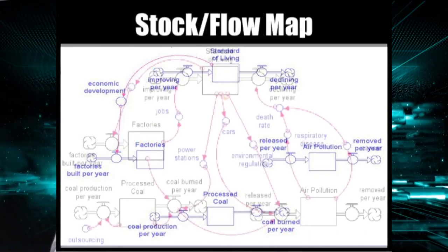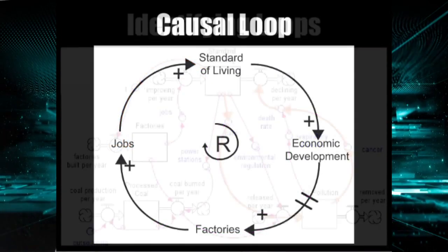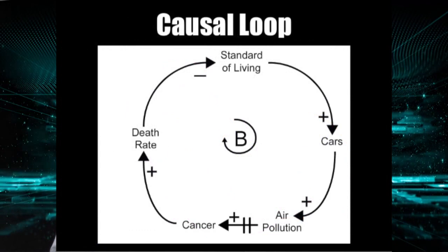Stock flow maps are the most involved and provide detailed understanding of the changes involved. But connection circles can be much quicker if we just need a basic understanding.